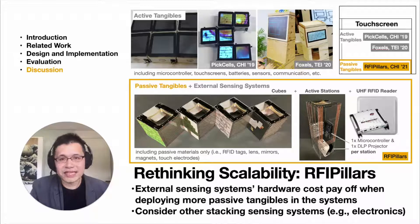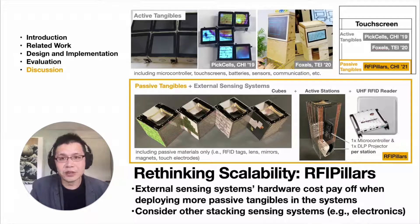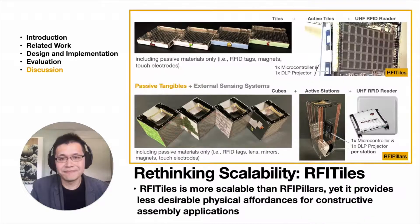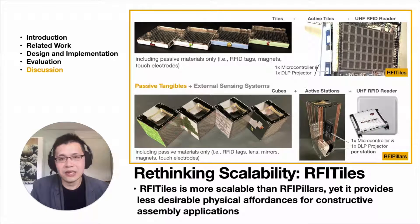We revisit the scalability in the passive approach regarding the RFI Pillar system. The passive tangibles are cheaper than the active tangibles because they are made of passive material, and the extra costs of the external sensing system pay off when systems have more passive tangibles. Using a cheaper electronics-based stacking sensing system could further reduce the cost. On the other hand, RFI Tiles is more scalable than RFI Pillars because the tangibles are simpler and the entire tile grid shares a single display. However, unlike RFI Pillars, RFI Tiles provide less support for constructive assembly applications.